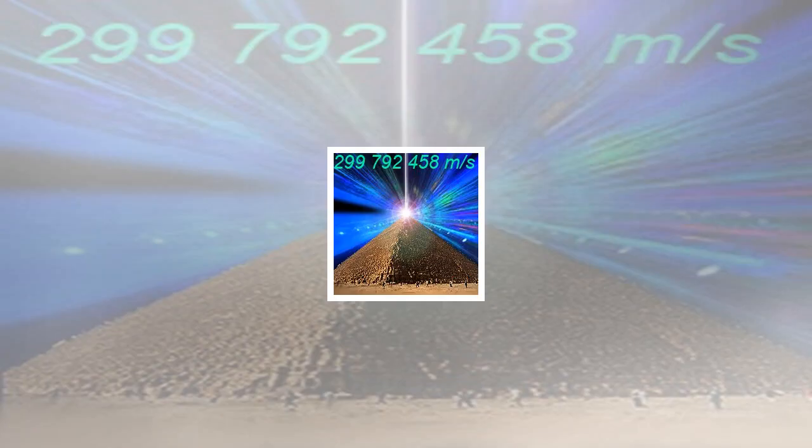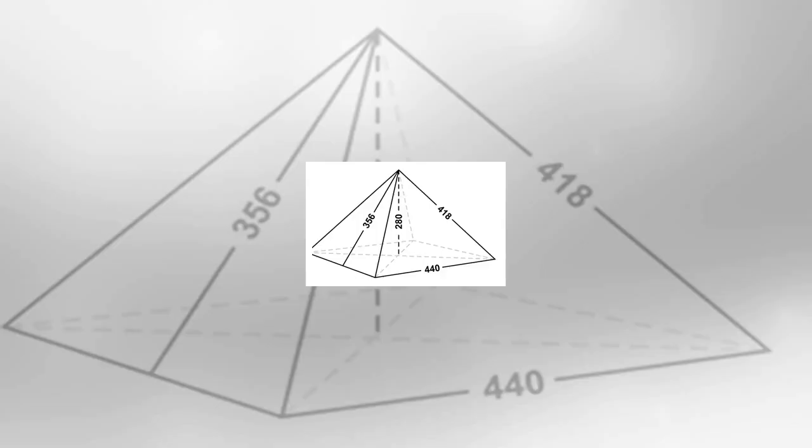The Great Pyramid encodes enormous amounts of numerical coincidences: pi, phi, dimensions and movement of our planet, axial tilts, precession, speed of light, and more. We can only wonder if the ancient architects were fully aware of these special numbers encoded in their design, or are these numbers simply the result of selecting two numbers, 7 and 11, for proportions for the Great Pyramid.